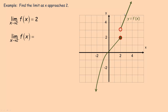For the right-hand limit, as x approaches 2 from above, we come down along the upper piece of the graph. As we get close to an x-value of 2 from that side, the y-value is approaching 3. So the right-hand limit is 3. Those two limits are different — the left and right-hand limits are not the same — so we say the limit of this function as x approaches 2 does not exist. Sometimes you'll see this abbreviated as DNE, or 'does not exist.'